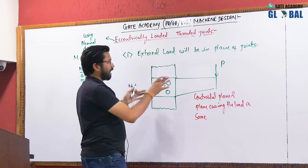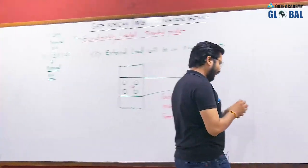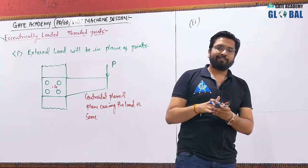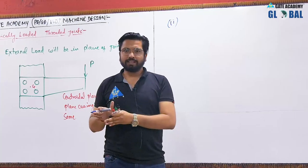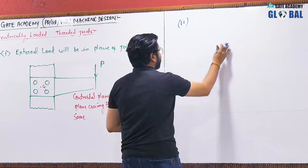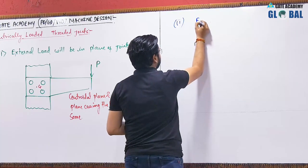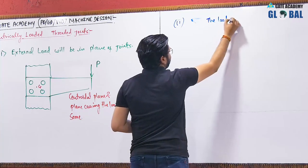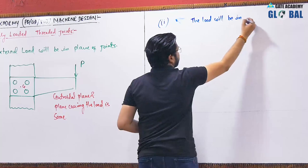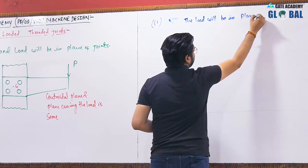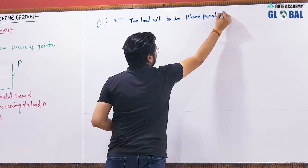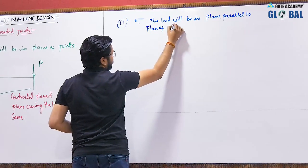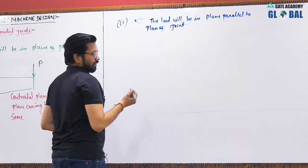I will be discussing the various aspects of this type of loading. In the second type of eccentric loading, the plane carrying the load will be parallel to the centroidal plane. That is, the load will be in a plane parallel to the plane of the joint.